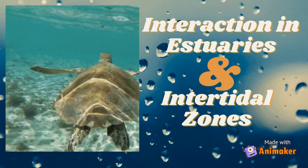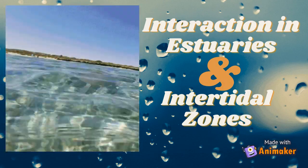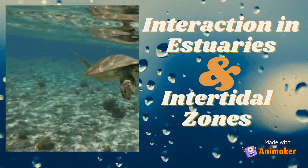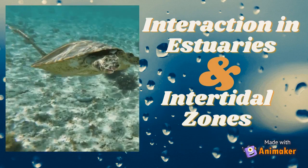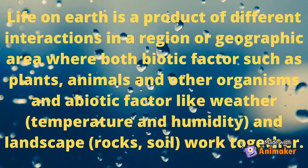This lesson will discuss the interactions of organisms to their physical environment. Life on Earth is a product of different interactions in a region or geographic area, where both biotic factors such as plants, animals and other organisms, and abiotic factors like weather, temperature, humidity, landscape, rocks, and soil work together.